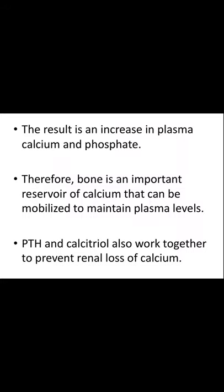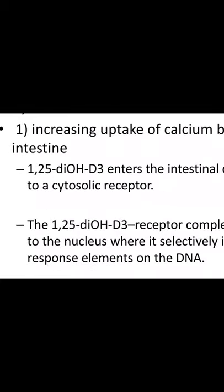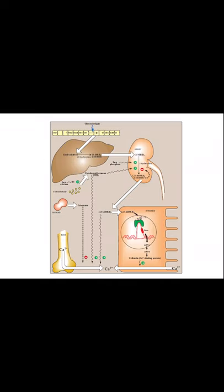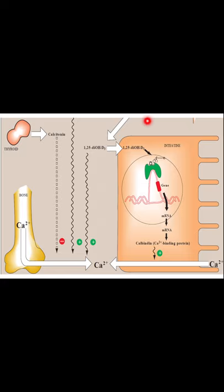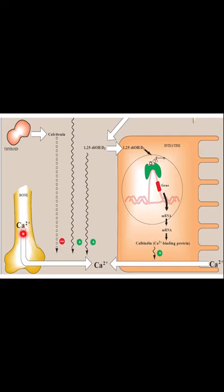PTH and calcitriol also work together to prevent renal loss of calcium. Once activated vitamin D comes to the intestinal cell, it goes into the nucleus and gene transcription takes place, producing messenger RNA. Translation then produces calbindin, the calcium binding protein, which binds calcium from the intestinal cell and brings it back into the plasma. When serum calcium is low, it also helps the resorption of bone by demineralization, bringing calcium to the plasma so that plasma levels are normalized.